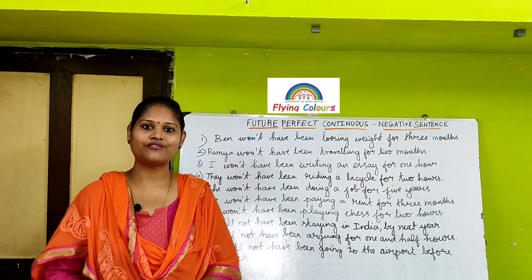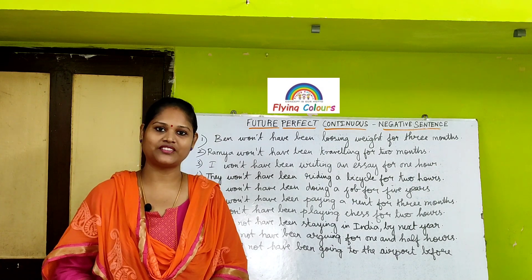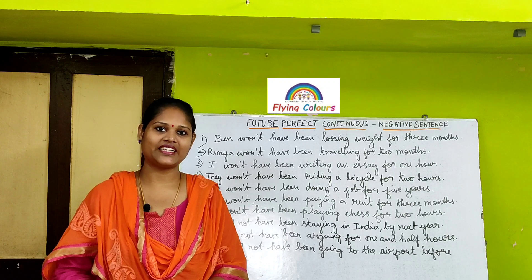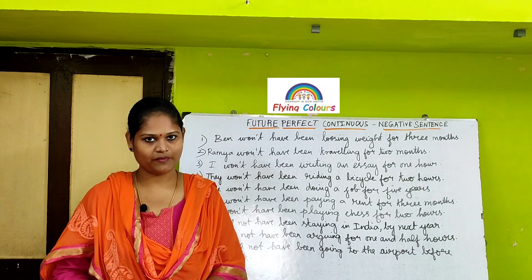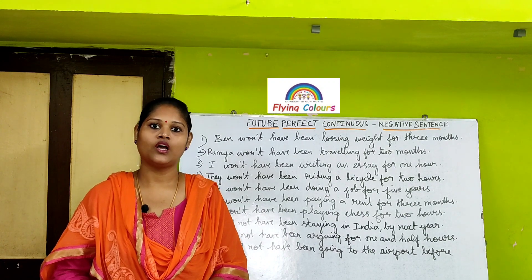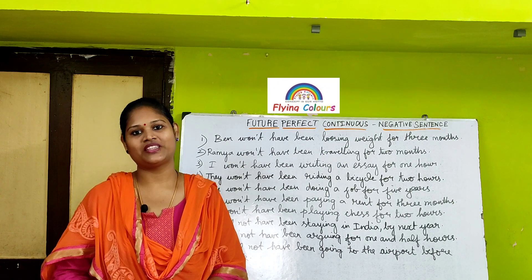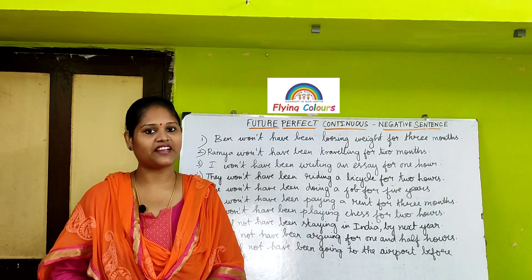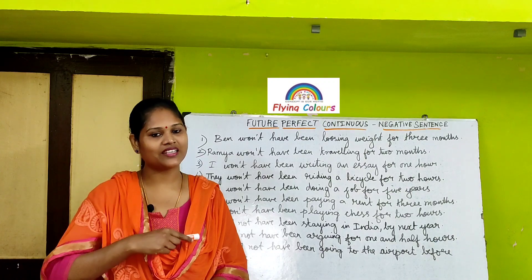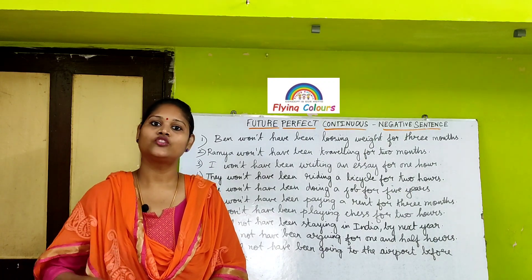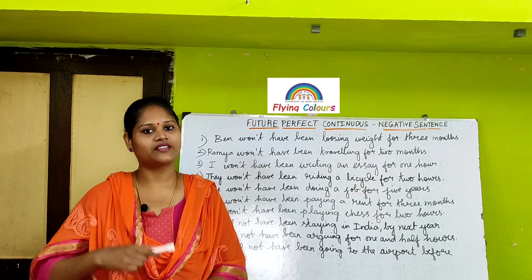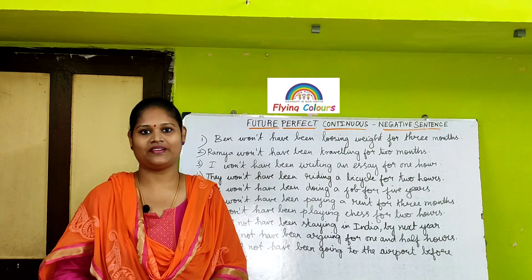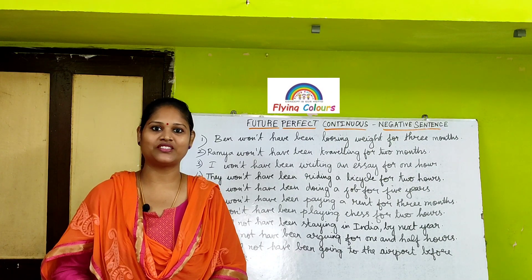The definition for future perfect continuous negative sentence is: an action started in the past, continuing in the present, but will not continue in the future. So any action which continues from the past and into the present, when it goes to the future, it will not happen. This is the meaning for future perfect continuous tense.